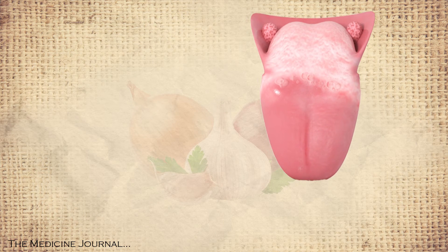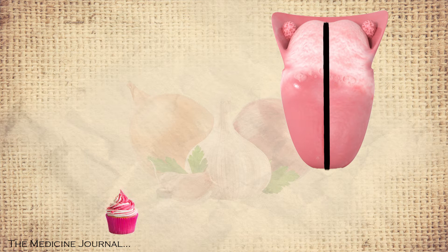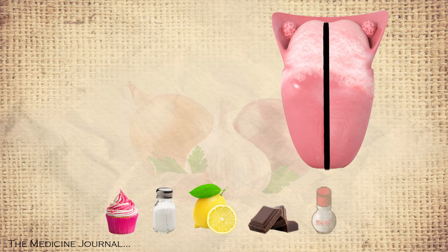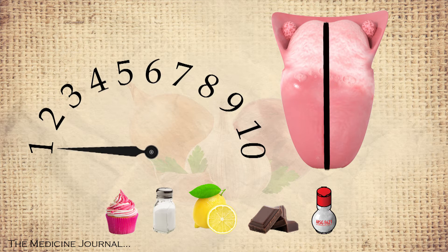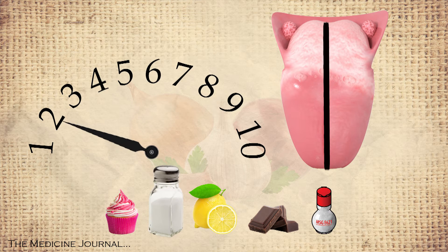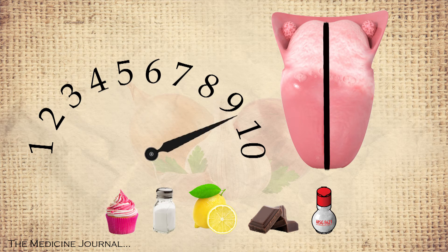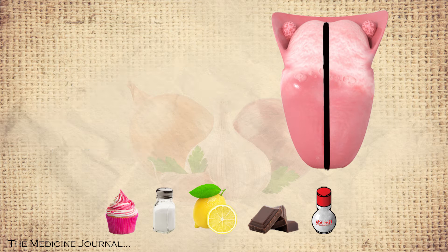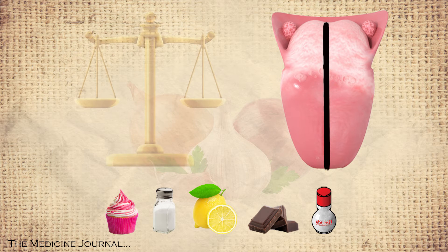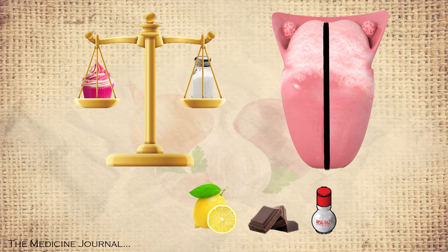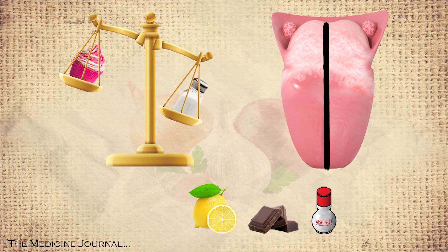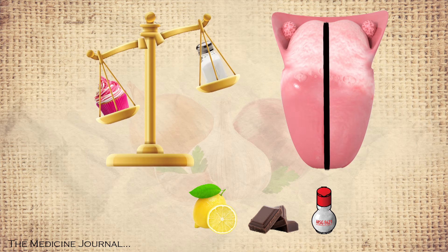About half of the gustatory cells within each taste bud react to several of the five basic flavors, with varying sensitivity to each type. A specific cell might react strongly to sweet but poorly to salt, while the cell next to it may react strongly to salt and poorly to sweet. Those reactions are classified in levels of intensity from one to ten. The other half of flavor cells within a taste bud are specialized and react only to one flavor, which is why some taste buds react overall to salty foods more than sweet, or sweet more than salt.